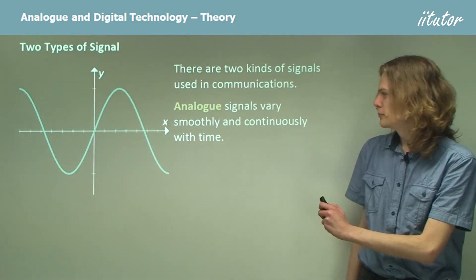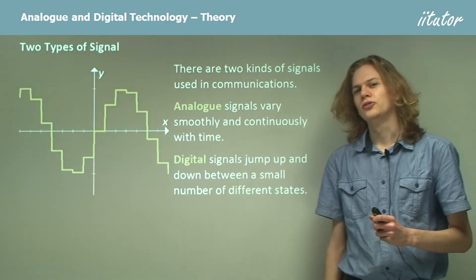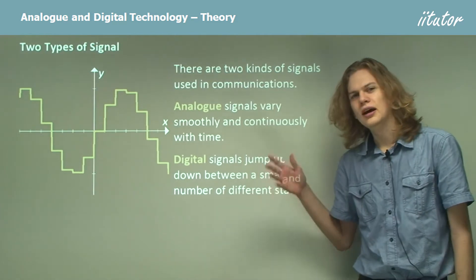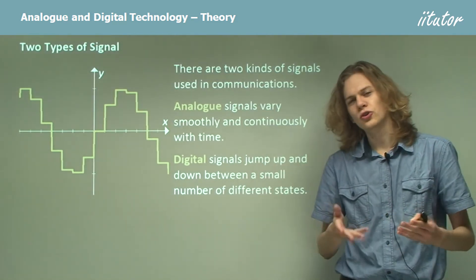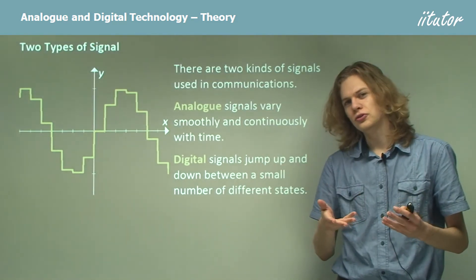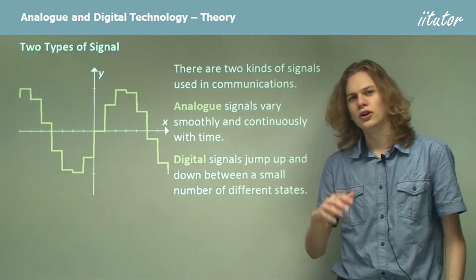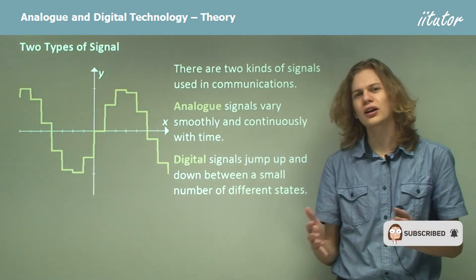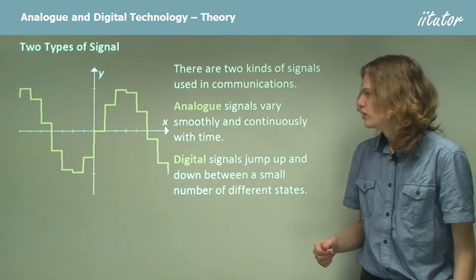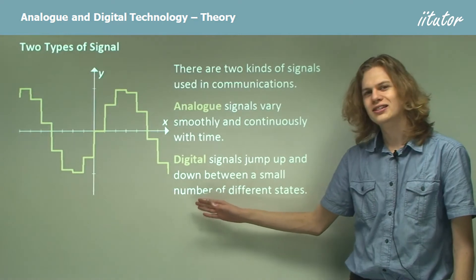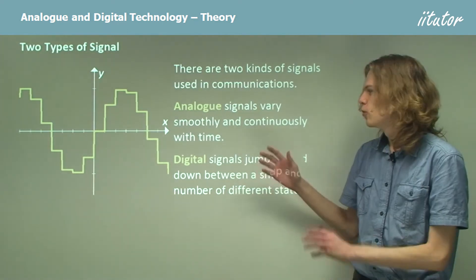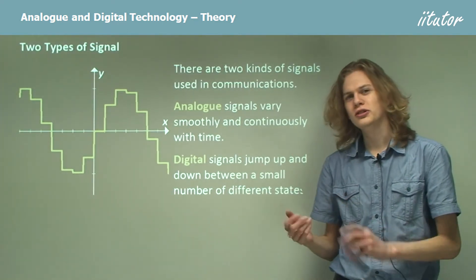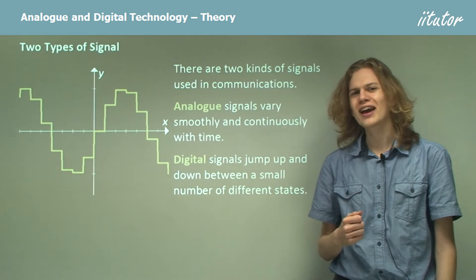On the other hand, digital signals look a little bit different. These will jump up and down because they can only take on a certain number of values. They can't take on an infinite number of y values or x values, so we get this sort of stepping or jumping shape. In computer terminology it's what we call aliasing.